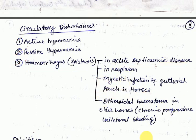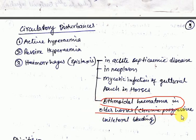Ethmoid hematomas are important in older horses. They are characterized by chronic, progressive, often unilateral bleeding.